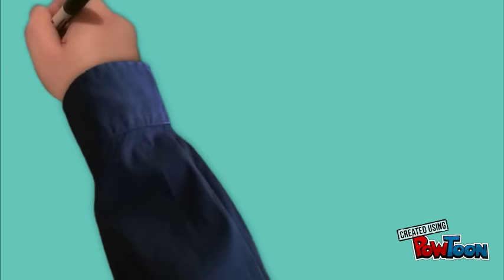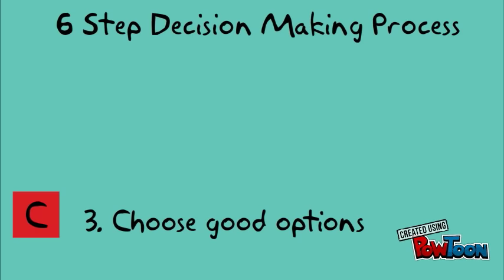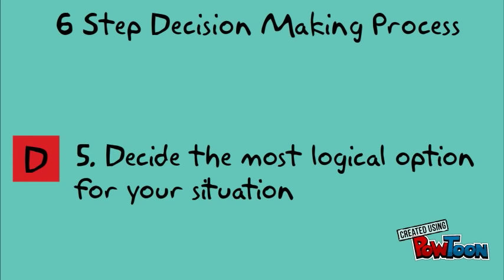Let's review the six-step decision-making process using the acronym DECIDE: Define your goal. Establish your criteria. Choose good options. Identify the pros and cons. Decide the most logical option for your situation. And evaluate the results.